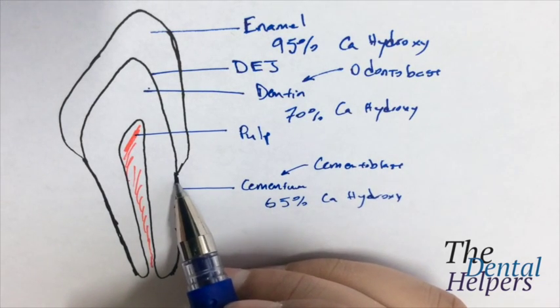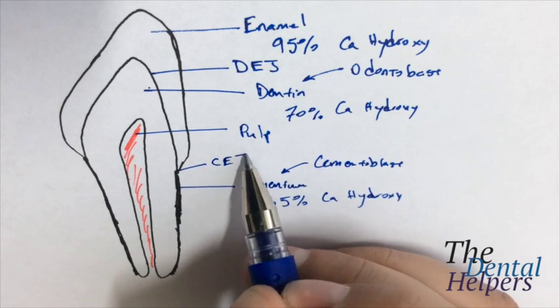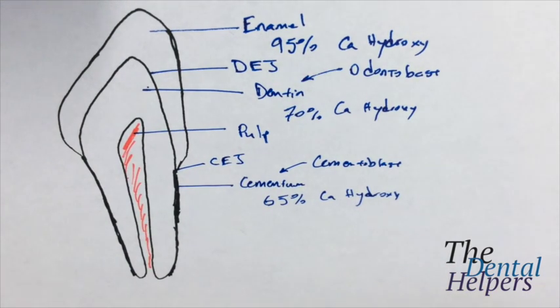And then this border between the cementum and the enamel is the CEJ. And as you might have guessed it, it's the cemento enamel junction. Really simple.